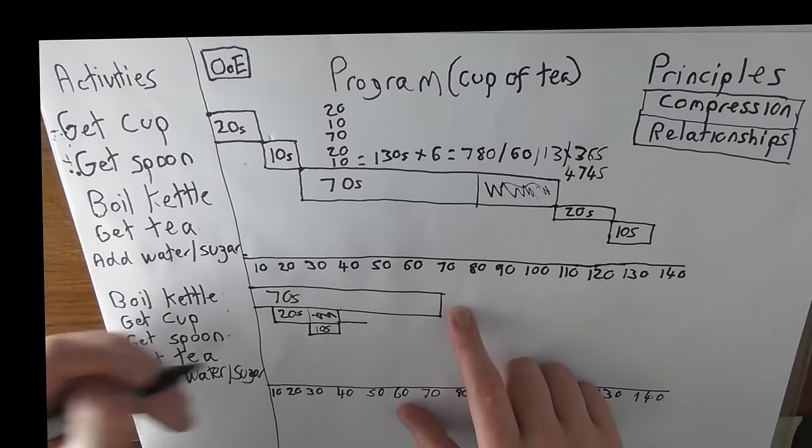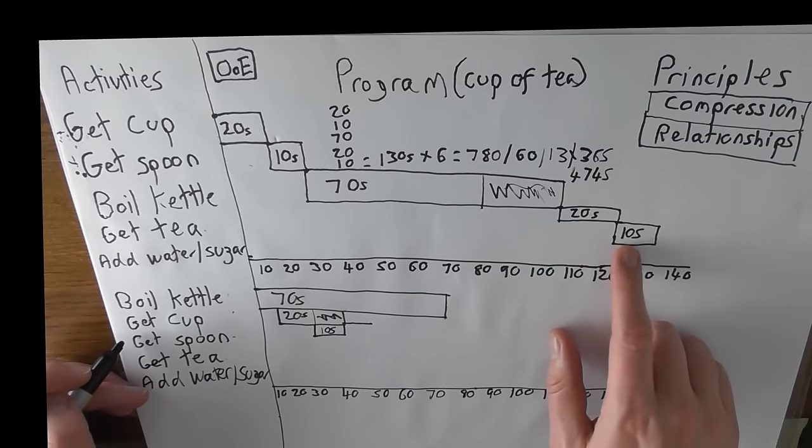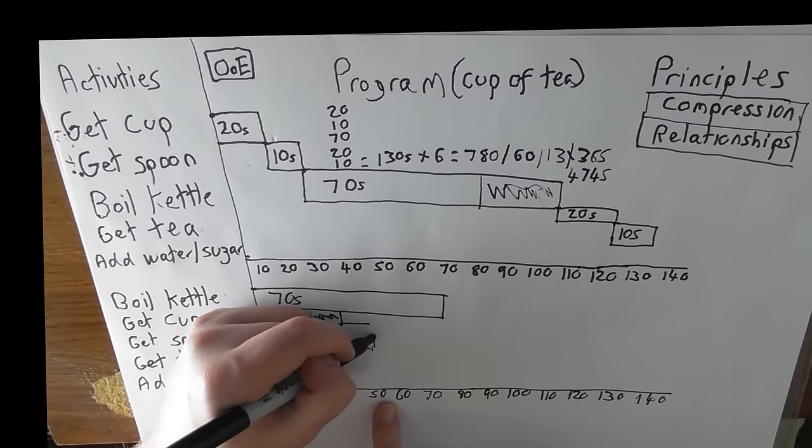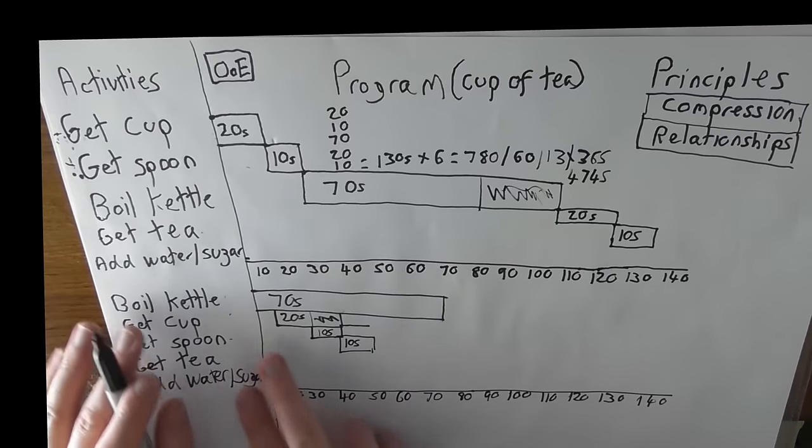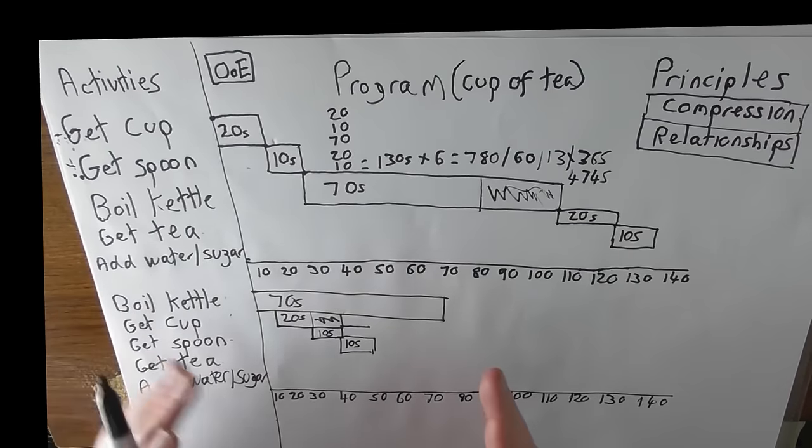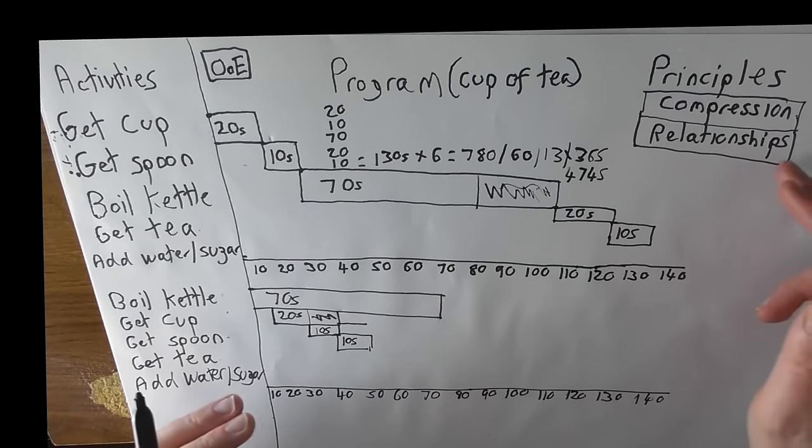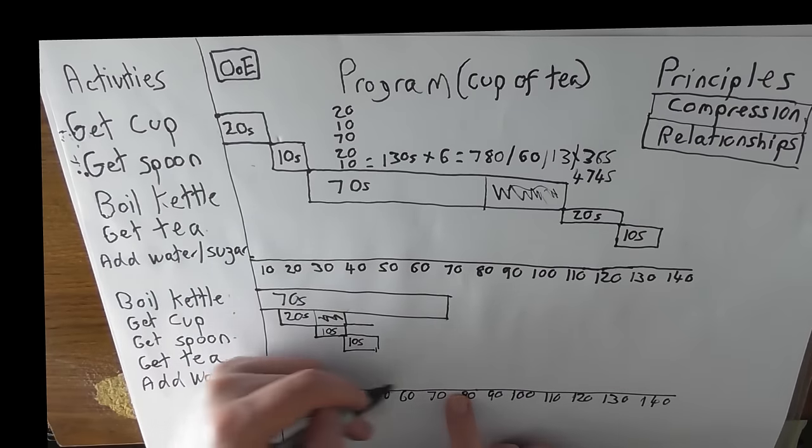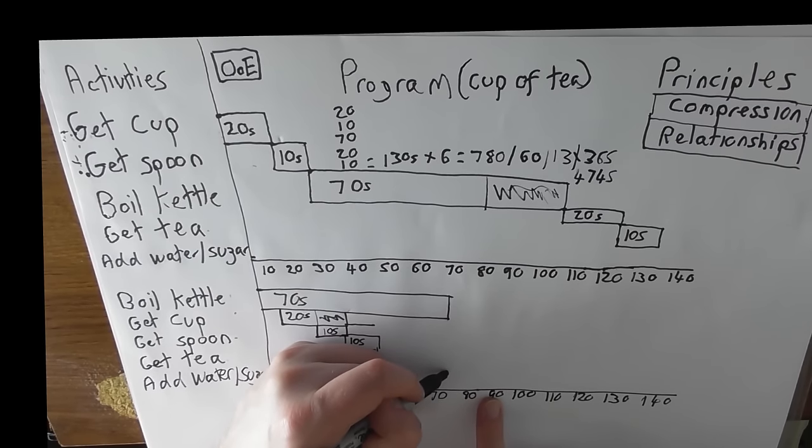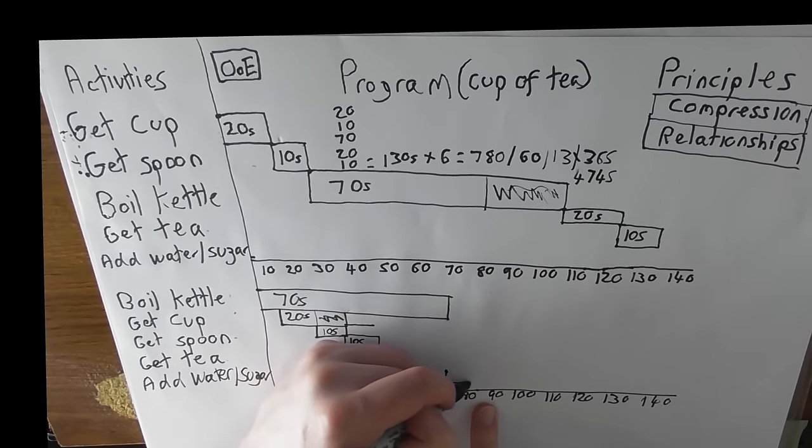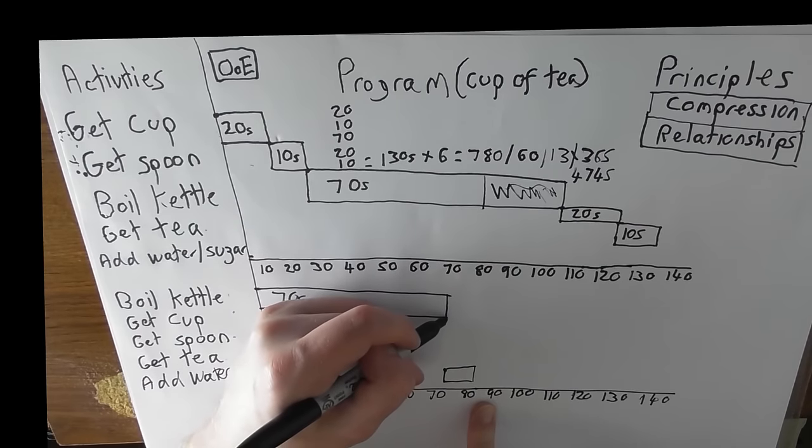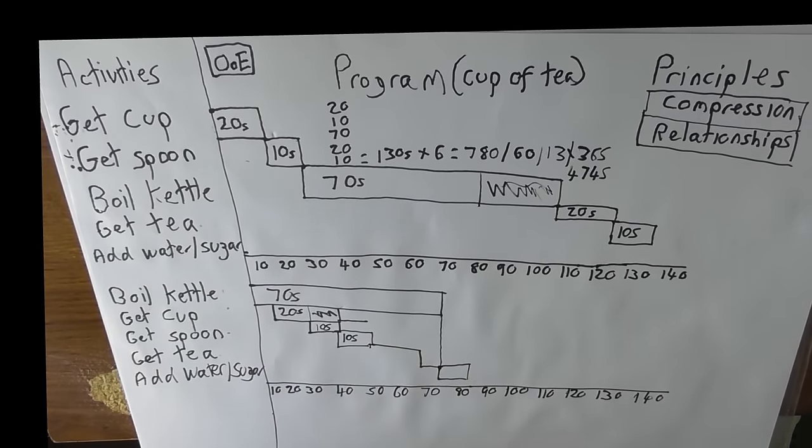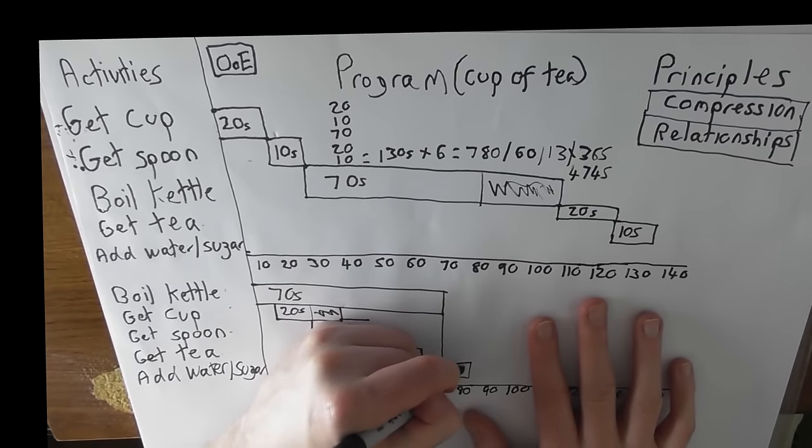Our get spoon activity starts here at 30 seconds for 10 seconds. Our get tea activity was 10 seconds. So we go from 40 to 50 for get tea. This is all happening while the kettle is boiling. Which, as I said, is compressing your schedule because of relationships. Now the add water and sugar can't happen until the boil activity is finished. So it's still happening down here. And it was 10 seconds. So it takes you from your 70 to your 80. And on a schedule that's represented by a little line that just comes down there. And that leads on to that. And that leads on to that. And this was 10 seconds.